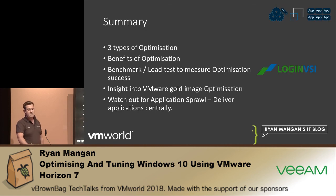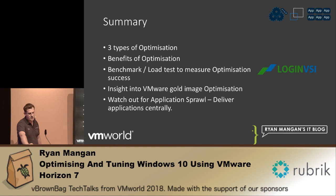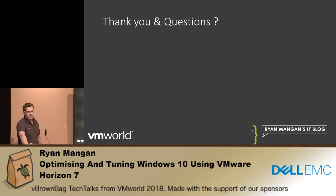In summary: three types of optimization, benefits of optimizing, and benchmarking — today using LoginVSI as the example. I've given you an insight into VMware gold image optimization and also watch out for application sprawl. Any questions? Thank you very much.